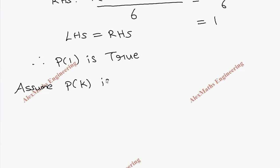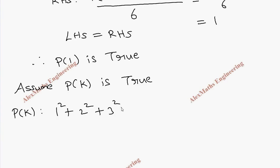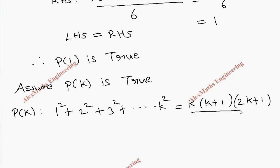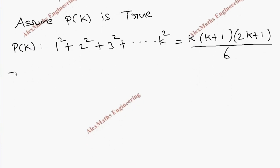Now we assume P(k) is true. The expression for P(k) is: 1² + 2² + 3² + ... + k² equals k(k+1)(2k+1) divided by 6.